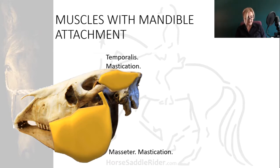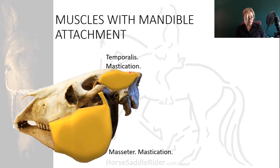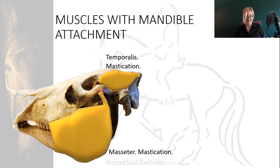Muscles with mandibular attachment include the substantial masseter muscle, which can be up to four centimeters thick in the younger horse but atrophied in the older horse. Together with the temporalis, these muscles are responsible for mastication or chewing. The masseter muscle has its origins in the maxilla and crosses the temporomandibular joint to the mandible.